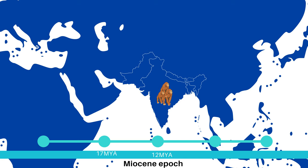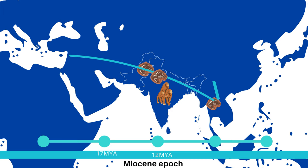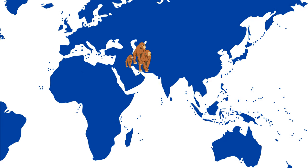The oldest known ape fossils in South Asia date back to the Middle Miocene period, about 12.5 million years ago. These fossils have been found in the Siwalik region of Pakistan and India, as well as in Thailand. This indicates that great apes dispersed from Eurasia to East Asia just before 12.5 million years ago.